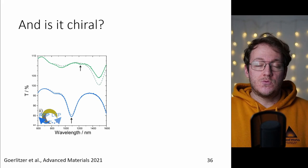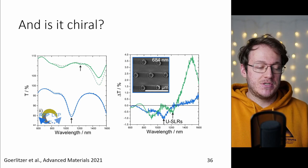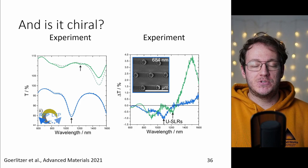If we now take these two examples and we are illuminating it with right and with left circularly polarized light we can measure the transmission and then we can also calculate the difference between the two of them and indeed we are seeing that the lattice resonances are becoming chiral not only in the experiment but also in the simulation.